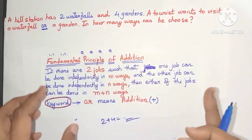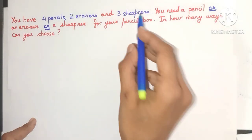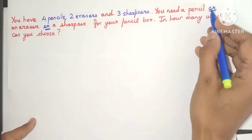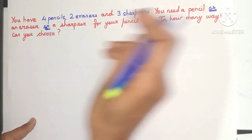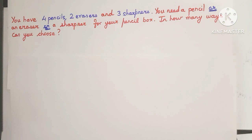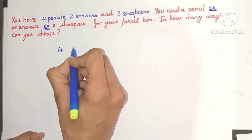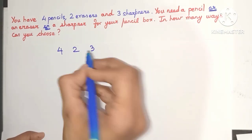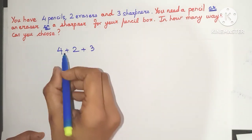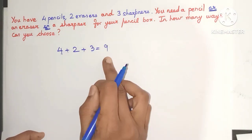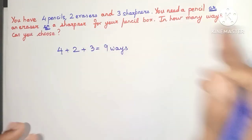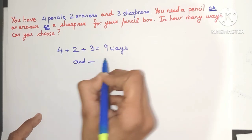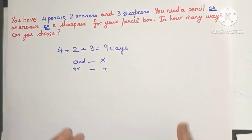Again this principle can be extended to any number of jobs. Here is the same pencil example, but now you need to choose a pencil or an eraser or a sharpener for the pencil box — note the word 'or.' So we use the addition principle: four pencils, two erasers, and three sharpeners — choose only one of them. So four plus two plus three equals nine. There are nine ways of choosing one of these items. Remember: 'and' means multiplication and 'or' means addition.